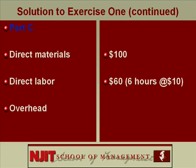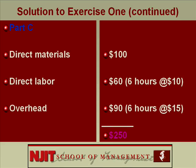How much would you charge for overhead? We decided overhead would be $15 per labor hour. They worked six hours, so six hours at $15 is $90 — that's the estimated overhead on this job. So the total is $250. That's the cost of the job. Then of course they'd add their profit margin before giving the customer an invoice.